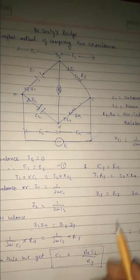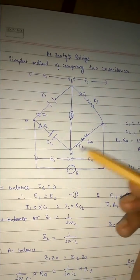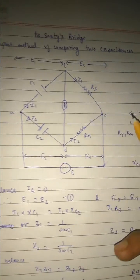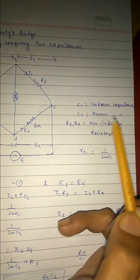This is our main objective. What we are doing is we are having this apparatus, suppose, so our C1 is the unknown capacitance and C2 is the known capacitance.